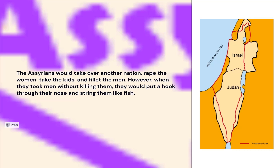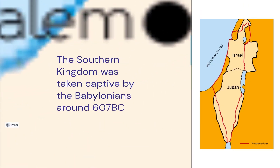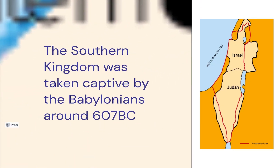The southern kingdom was taken captive by the Babylonians around 607 BC. The Babylonians had a totally different strategy.